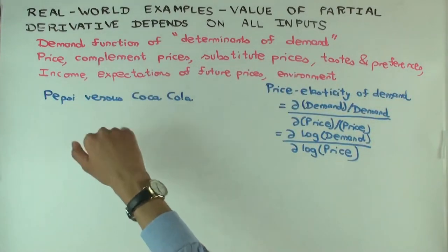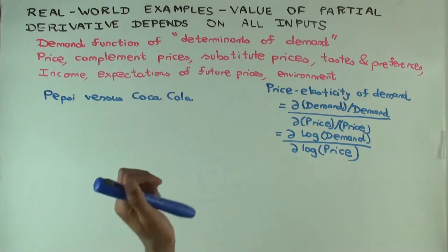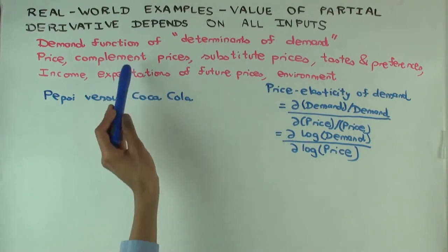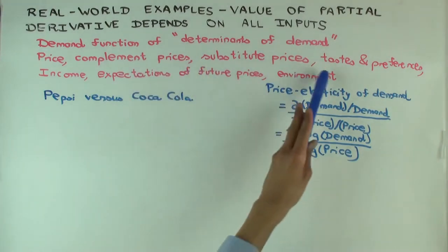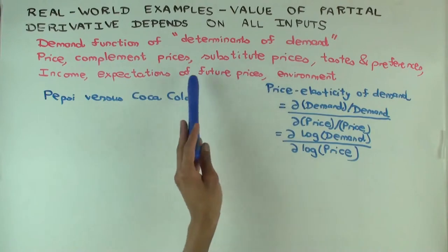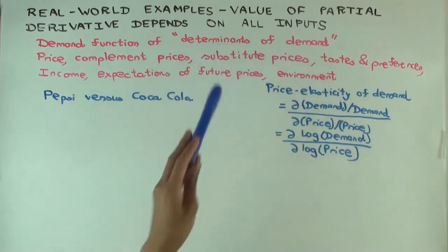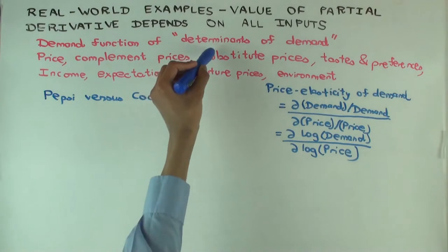The most important determinant is the unit price of the good — how expensive it is. Also important are the prices of other related goods. I'll focus on one of those which is important for our purpose: substitute prices.